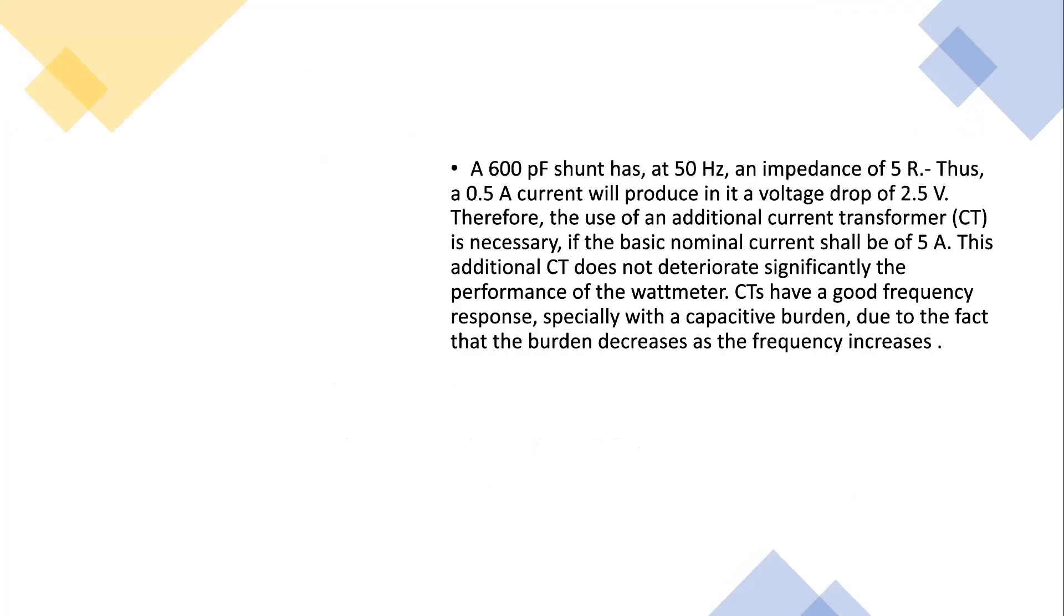The 600 pF shunt has an impedance of 5 ohms. Thus a 0.5 A current will produce in it a voltage drop of 2.5 volts. Therefore the use of an additional current transformer CT is necessary if the basic nominal current shall be 5 A. This additional CT does not deteriorate significantly the performance of the wattmeter. CTs have a good frequency response especially with a capacitive burden, due to the fact that the burden decreases as the frequency increases.